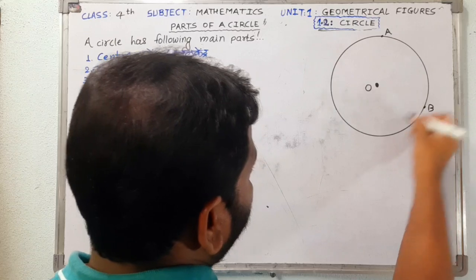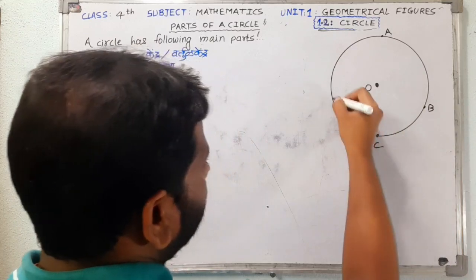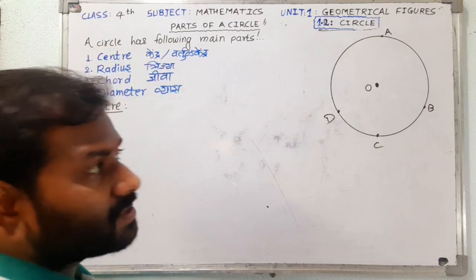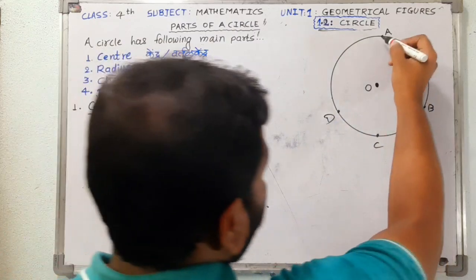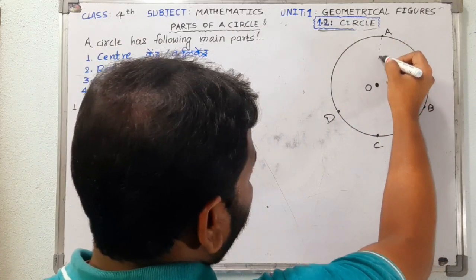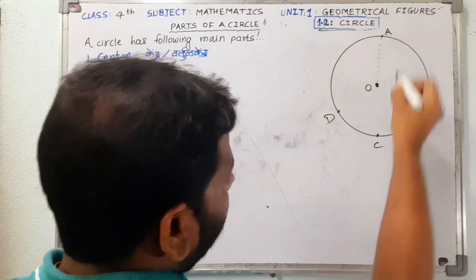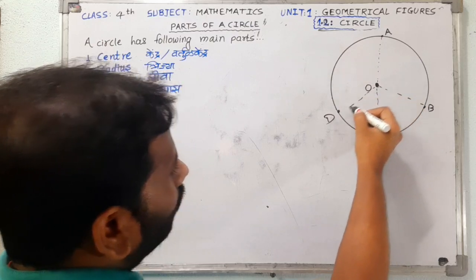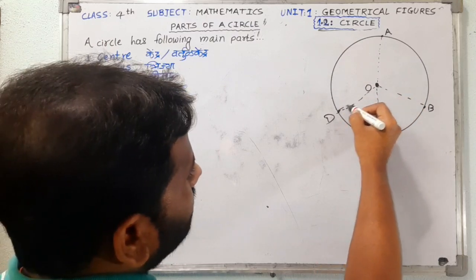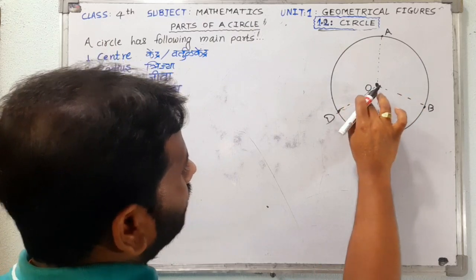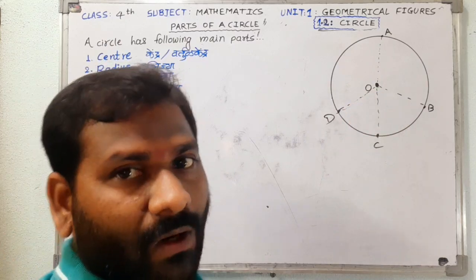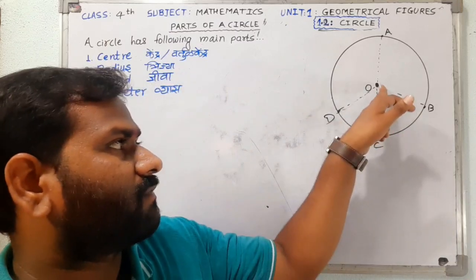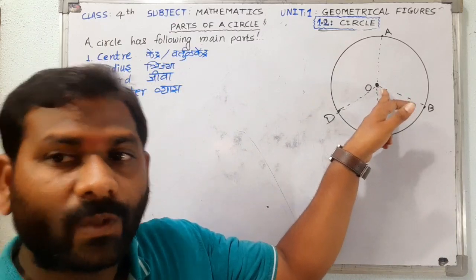We have point A, point B, point C, and point D on the circle, and we have measured the distances. When we measure all these distances — OA, then OB, then OC, and finally OD — our observation was that all these points on the curve are located at equal distance from the point O.